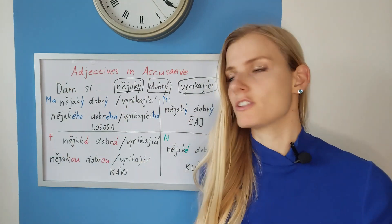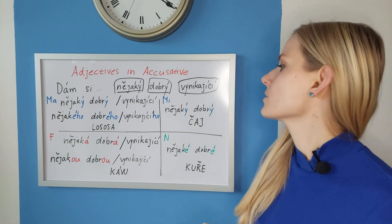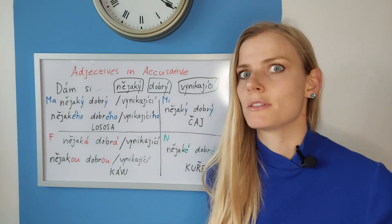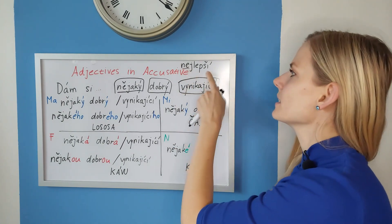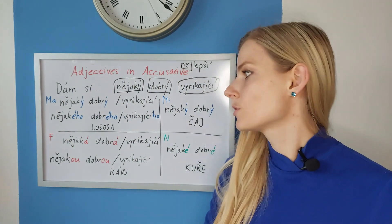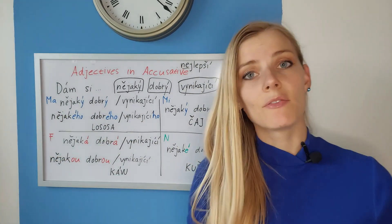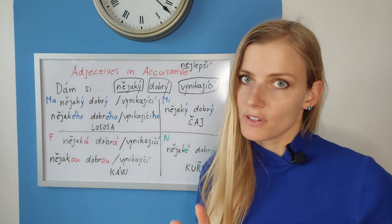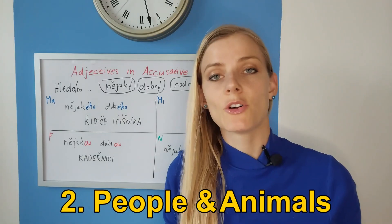So keep in mind we have two types of adjectives: ones that change according to gender and also change in the accusative, and those that finish with -í which don't change with gender and in the accusative only take -ho for masculine animate. For example nejlepší — 'the best' — ends with -í and stays the same for all genders in nominative: To je nejlepší losos, nejlepší káva, nejlepší kuře. In the accusative it only changes for masculine animate: Dám si nejlepšího lososa, but Dám si nejlepší kávu — stays the same.